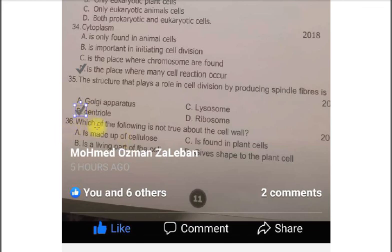The last question which is the following is not true about cell. Again note the question is asking is not true. That means false. The option A is made up of cellulose. Option B is a living part of the cell. Option C is found in the plant cells. Option D gives shape to the plant cells. So, out of this the statement which is not true is false is the B is a living part. Cell wall is the non-living part of the cell.